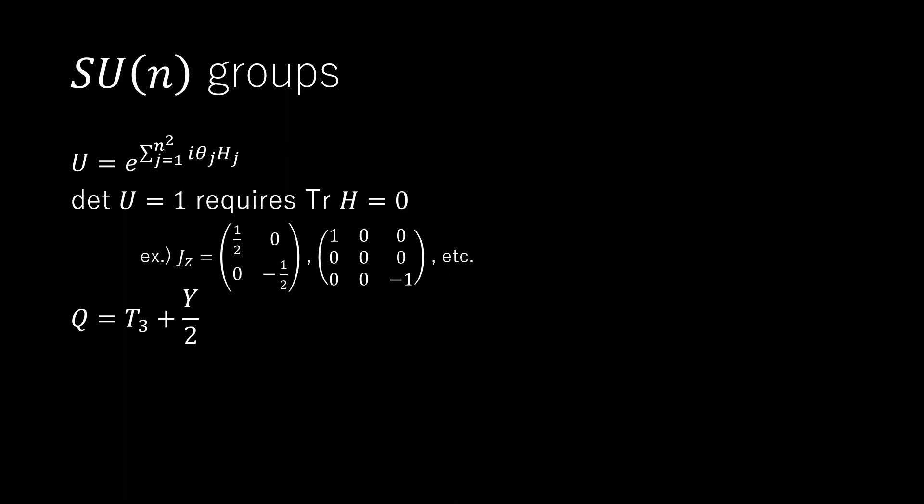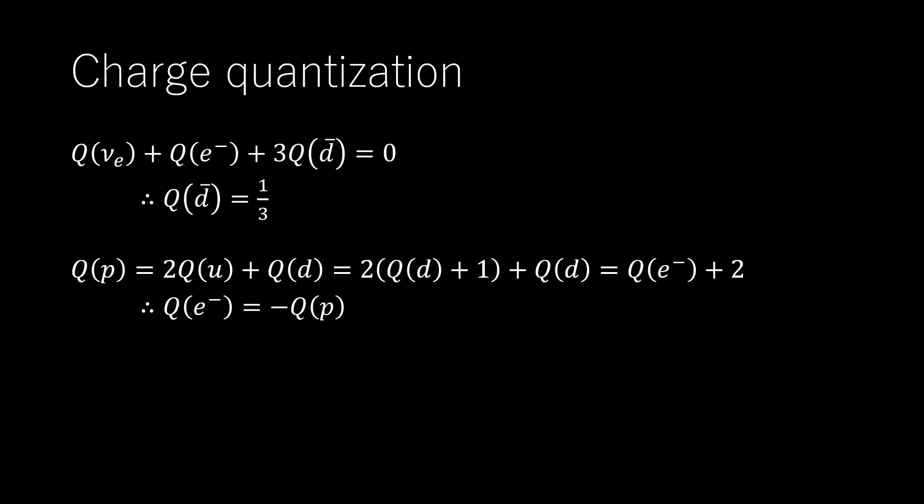The electric charge operator is a linear combination of the diagonal SU-2 and U-1 generators. Thus we want to require that the sum of the eigenvalues of the electric charge be zero. This implies Q(nu-e) + Q(e) + 3Q(d-bar) = 0, so we have derived Q(d-bar) = 1/3, the fractional charge of the down quark.